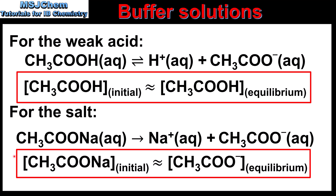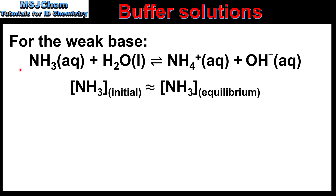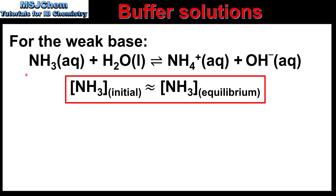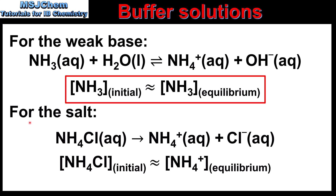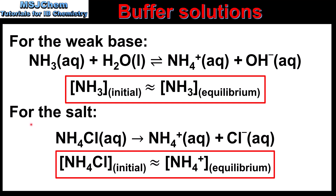Next we'll look at the assumptions for a weak base and its conjugate acid. For a weak base, we make the same assumption as for a weak acid: the initial concentration of the weak base is equal to the equilibrium concentration of the weak base. And for the conjugate acid, which comes from the salt, the equilibrium concentration of the conjugate acid is equal to the initial concentration of the salt.